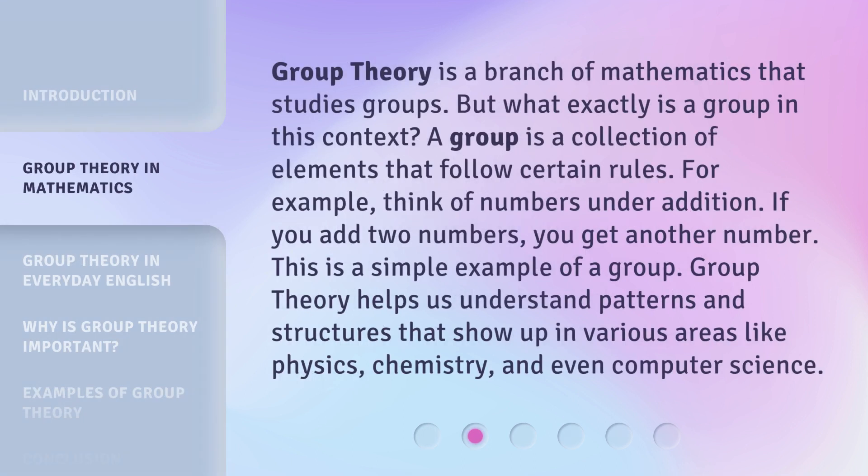Group theory is a branch of mathematics that studies groups. But what exactly is a group in this context? A group is a collection of elements that follow certain rules. For example, think of numbers under addition. If you add two numbers, you get another number. This is a simple example of a group. Group theory helps us understand patterns and structures that show up in various areas like physics, chemistry, and even computer science.